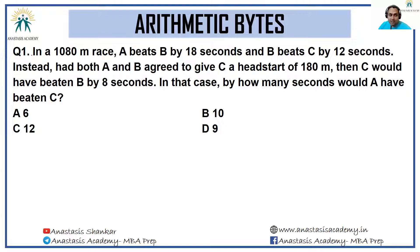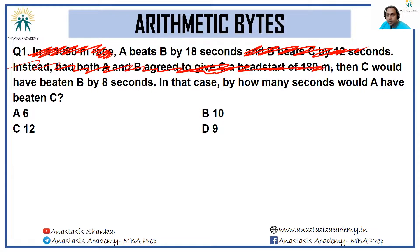Simply forget this part, forget this part, forget this part — forget everything. Just the important bits of information are: A beats B by 18 seconds, and C would have beaten B by 8 seconds.